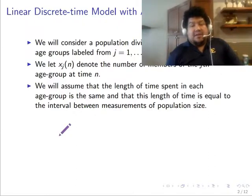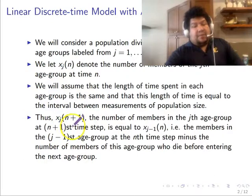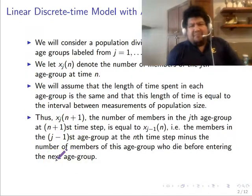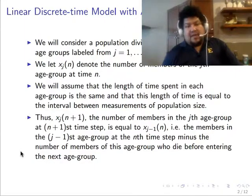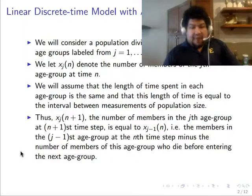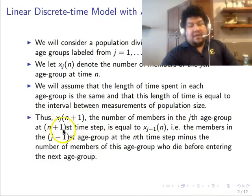Another assumption is that the length of time spent in each age group is the same, and is equal to the interval between measurements of population size. At step n+1, the number of individuals in the j-th group is equal to those that were in the previous group at the previous time step. So the number in group j at time n+1 equals those who were in group j minus one at time n.